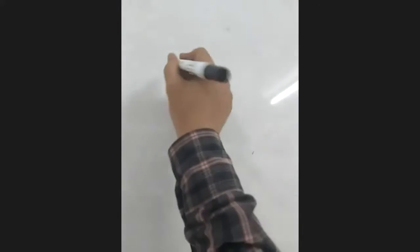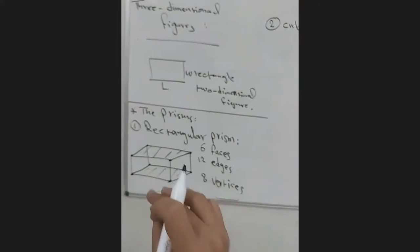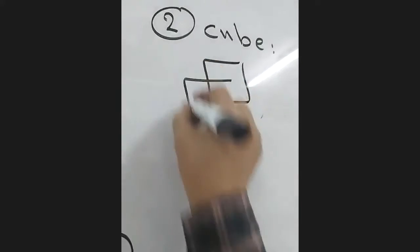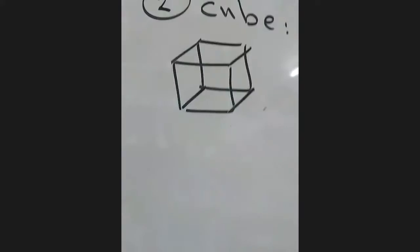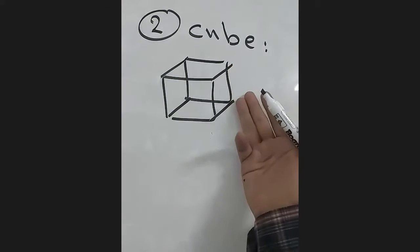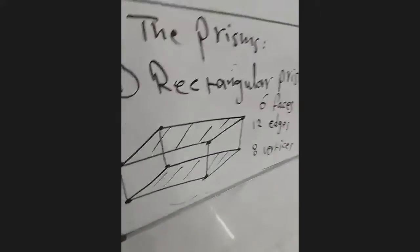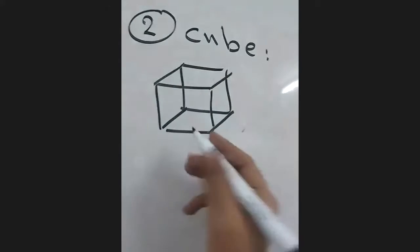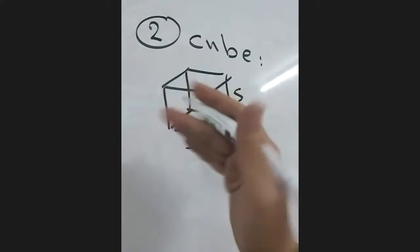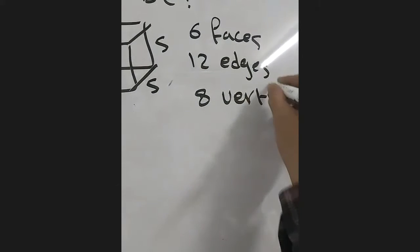The second prism we call a cube. A cube is the same as the rectangular prism, but with one difference: in the cube, all the sides' lengths are equal — the length equals the width equals the height. In the rectangular prism, the length, width, and height are different from each other. So if the sides are equal, we call it a cube, denoted S, S, S. It also has six faces, 12 edges, and eight vertices.